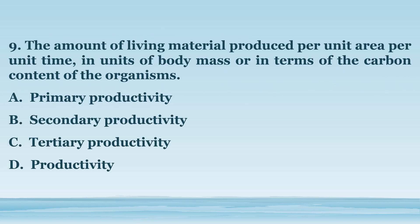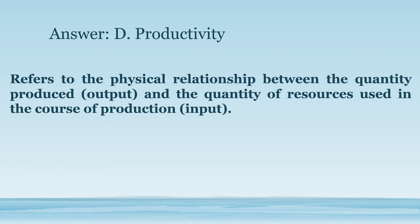Number 9. The amount of living material produced per unit area per unit time, in units of body mass, or in terms of the carbon content of the organisms. A. Primary productivity. B. Secondary productivity. C. Tertiary productivity. D. Productivity. The answer is letter D. Productivity. This refers to the physical relationship between the quantity produced (output) and the quantity of resources used in the course of production (input).